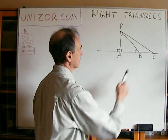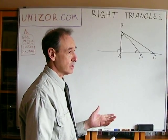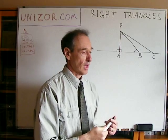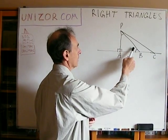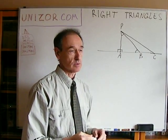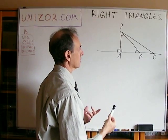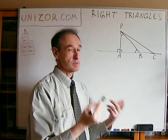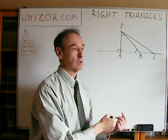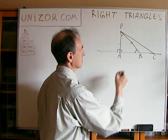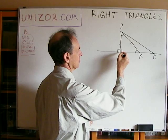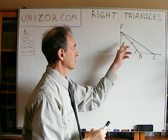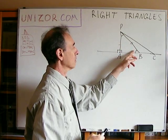First of all, consider triangle PAB. Obviously it is a right triangle since PA is a perpendicular, so there is a 90-degree angle. As I pointed out before, all other angles in this triangle are acute — less than 90 degrees — which means that angle PAB, the right angle, is bigger than angle PBA, an acute angle. And since opposite a bigger angle we have the bigger side, PB is bigger than PA, because PB lies opposite the right angle of 90 degrees, and PA lies opposite the acute angle PBA.